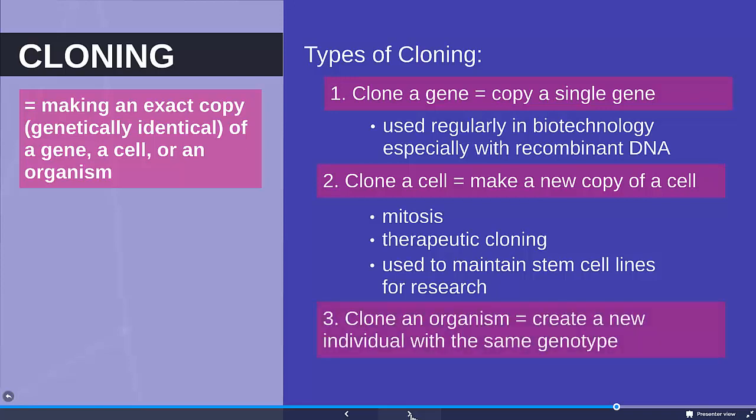It's the third kind of cloning that gets the bad rap. This is cloning an organism — creating an entirely new individual with exactly the same genotype. The most famous example is Dolly the sheep. The way this works is you take the nucleus from an individual, take an egg from the same species, remove the nucleus of the egg, and put the complete nucleus from the original organism into that egg. Then you implant the egg in a surrogate mother who carries that new embryo until it's born — that is a cloned organism.